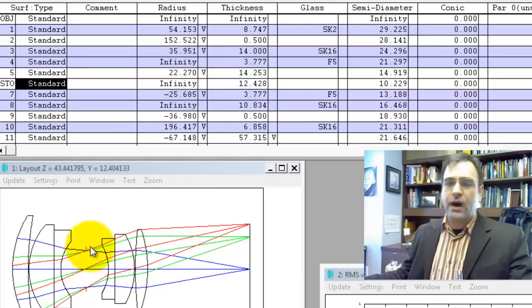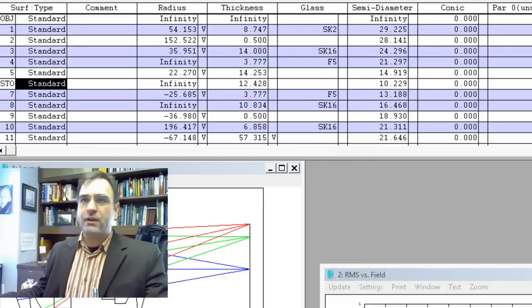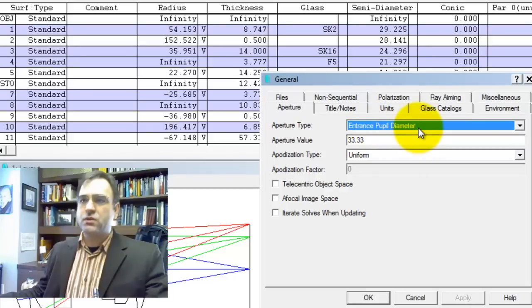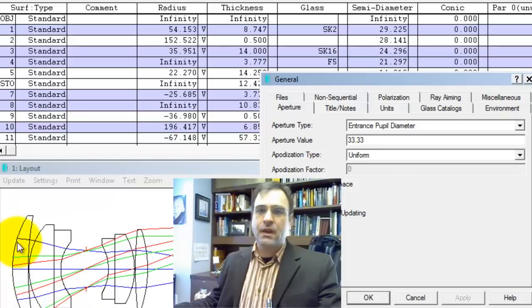So we've called this our stop. This is an iris, an internal iris here. And we don't have an aperture value. So let's check how that system aperture is set. It comes with an entrance pupil diameter and it's setting it to 33 millimeter diameter. So this surface or this beam right here is 33 millimeters.